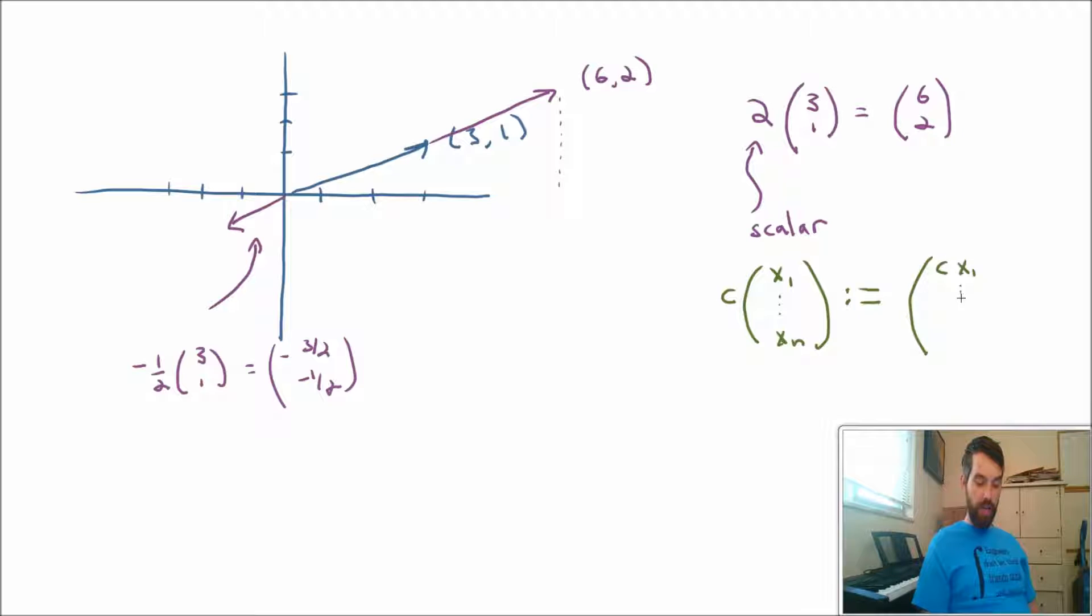This is defined to be, I just take that c, and I multiply it in front of every single one of these different components, cx1 down to cxn. And this algebraic notion I defined corresponds geometrically to the stretching of the vector by the scalar c.